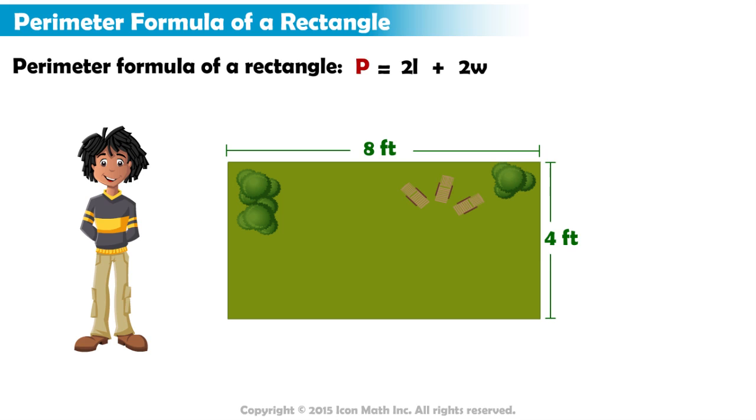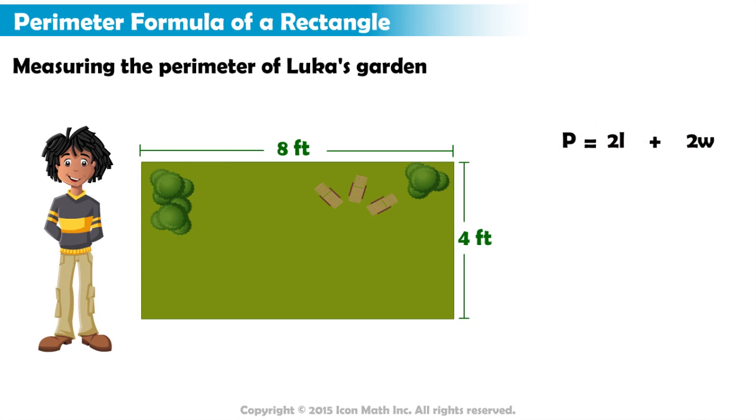He uses the formula P equals 2L plus 2W. First, he substitutes 8 for the length, L, and 4 for the width, W.